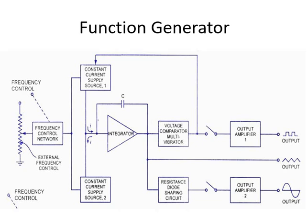When the output voltage equals the maximum predetermined level on the negative side, the voltage comparator multivibrator again changes the condition — switching off the lower current source and switching on the upper current source. The output voltage of the integrator has a triangular waveform, whose frequency is determined by the magnitude of the current supplied by the upper and lower current sources. To get a square wave, the output of the integrator is passed through the comparator, which delivers a square wave output of the same frequency as the input triangular wave. The sine wave is derived from the triangular wave using a diode-resistance shaping network.